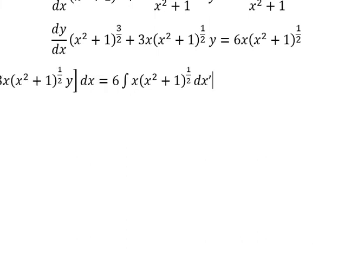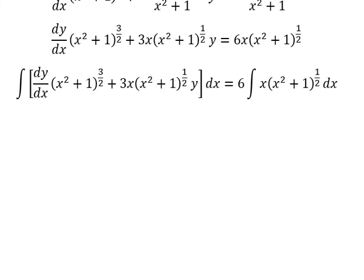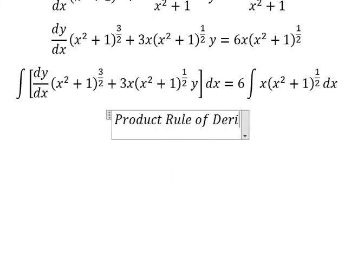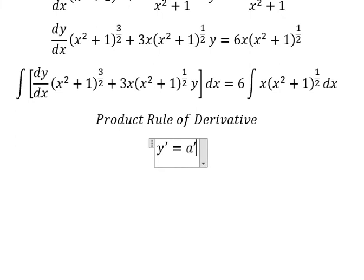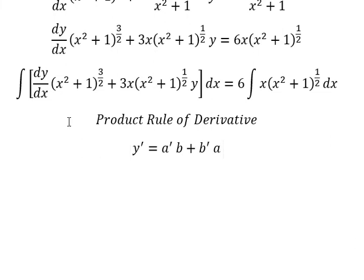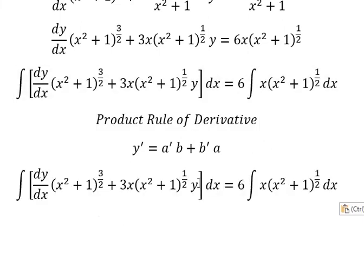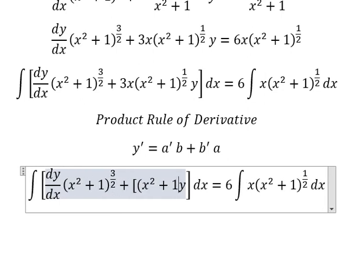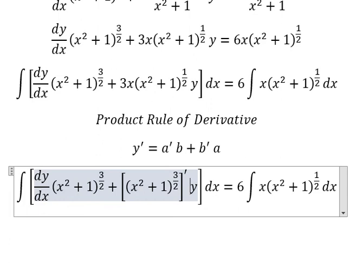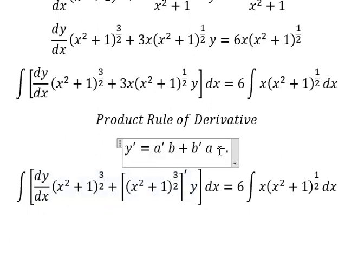Next, we can use the product rule of the derivative. The first derivative of y equals the first derivative of A multiplied by B, plus the first derivative of B multiplied by A. So the integration of this expression gives us y equals A times B.